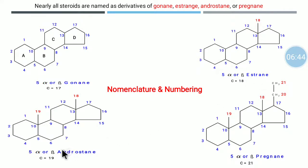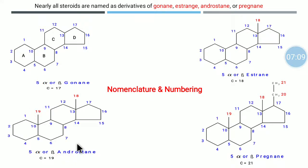After estrane, the next is androstane. The difference from estrane is that we have again added 1 more carbon atom — a beta methyl group — between ring A and ring B, and given it the number 19. The last is pregnane, which has 2 additional carbons above carbon number 17, located at the D ring — these are carbon 20 and 21.